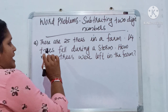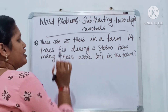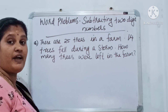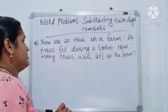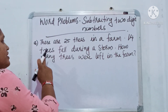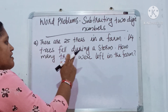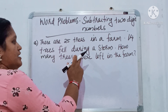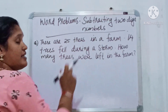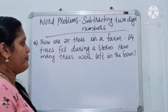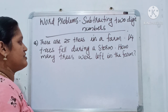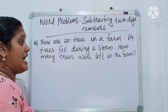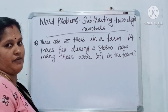First question. There are 25 trees in a farm. 14 trees fell during a storm. How many trees were left in the farm?